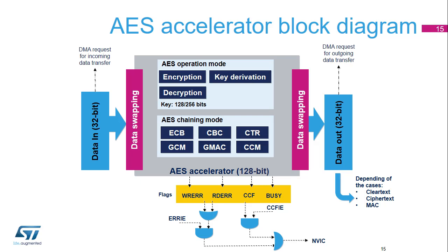This simplified block diagram of the AES Accelerator shows the data path from data in on the left to data out on the right. The AES Accelerator processes 128-bit data blocks using an encryption key with a length of either 128 or 256 bits, with or without a data swapping option.